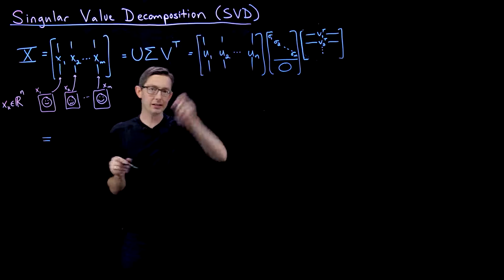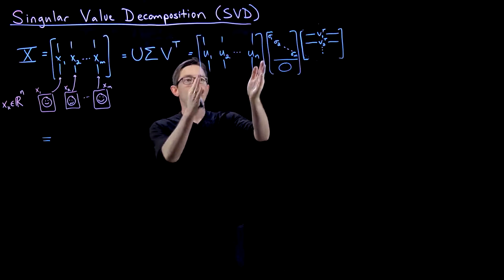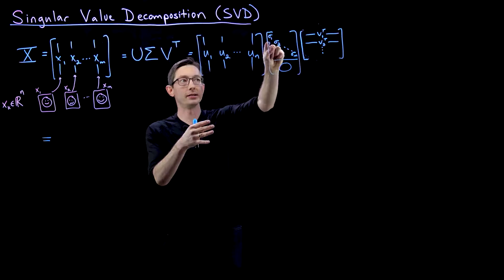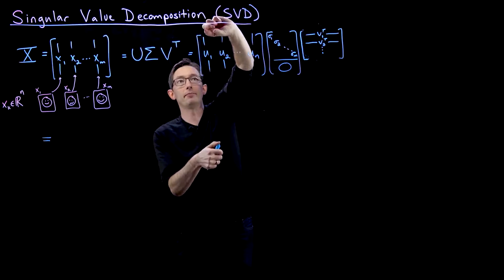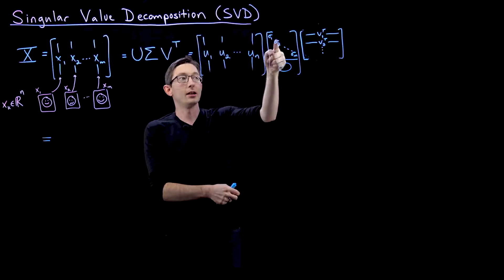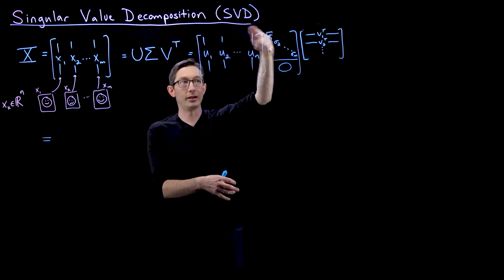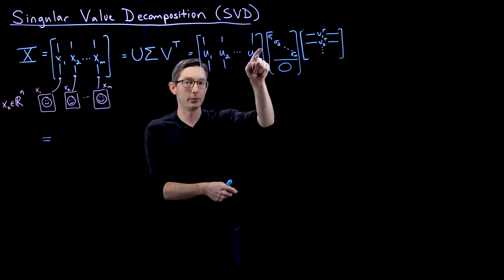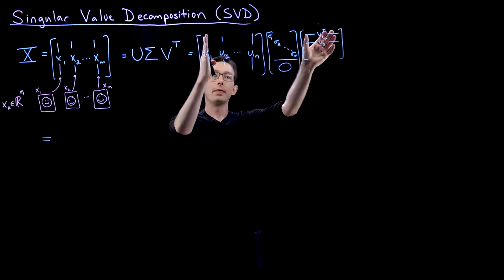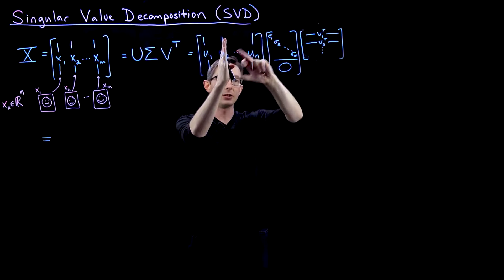So X equals, based on the singular value decomposition, U times sigma. Because sigma is a diagonal matrix, if I take U times sigma, U1 gets scaled by sigma1 only — every other term in that column is zero. The second column gets sigma2·U2, and so on. So multiplying U by sigma gives sigma1·U1, sigma2·U2, and so forth. Then multiplying that matrix by V transpose, the first column sigma1·U1 only multiplies the V1 transpose row, the second only multiplies V2 transpose, and so forth.